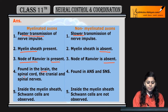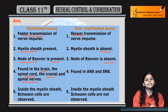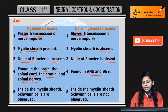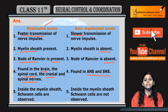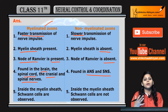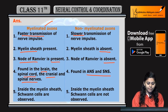Point 4: Found in brain, spinal cord, cranial and spinal nerves. Point 5: Myelinated axons are present in somatic nervous system, whereas non-myelinated axons are present in ANS and SNS, that is Autonomic Nervous System and Somatic Nervous System.